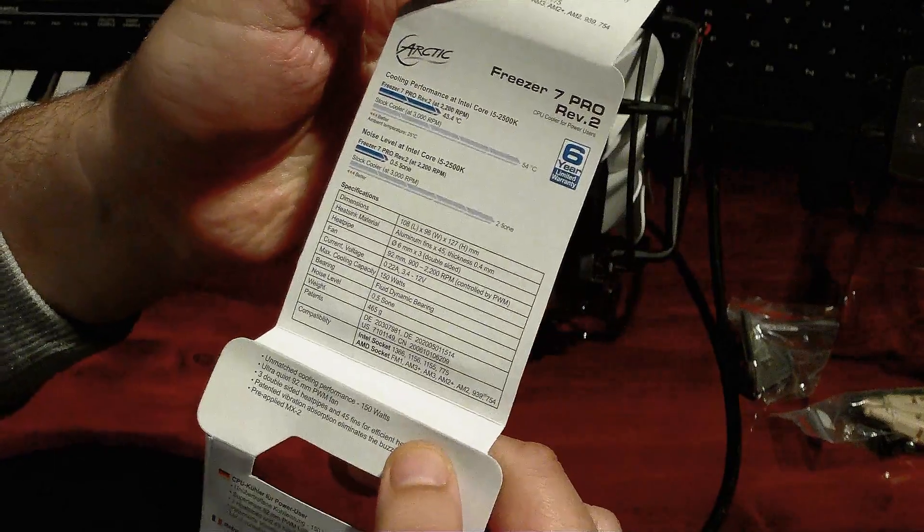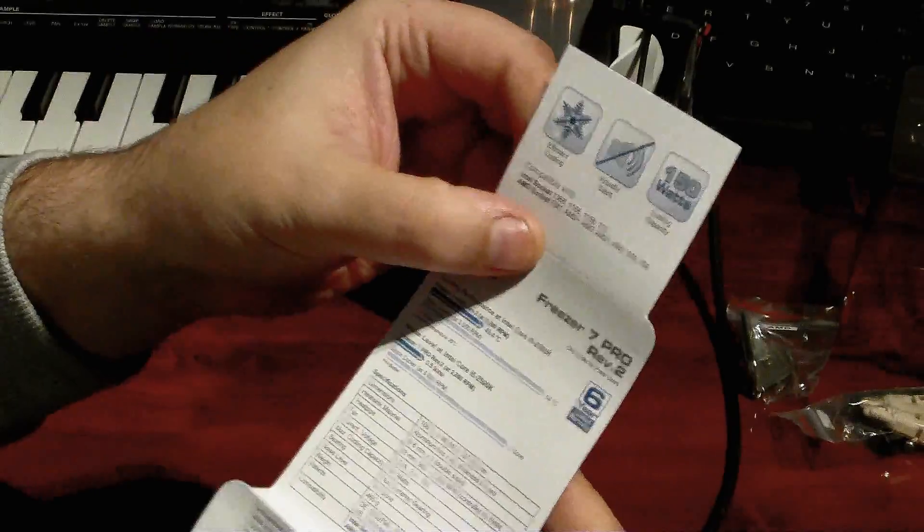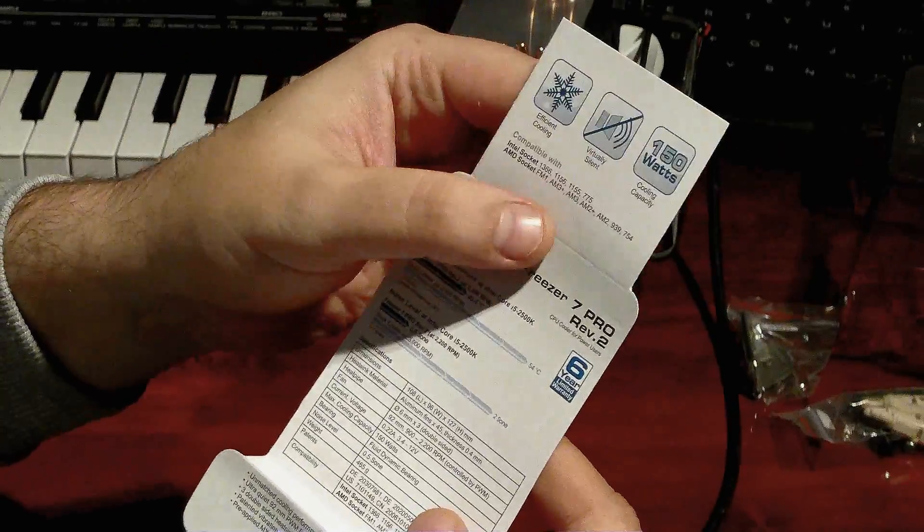Let's have a look at some of the specs on the box. Well, it says on the box, 150 watts cooling capacity. The processor itself is 150 watts.